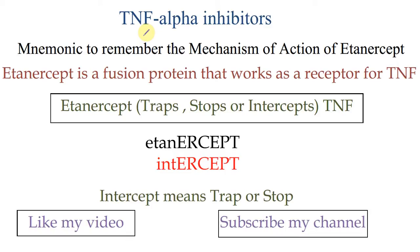The mechanism of action of etanercept is that it is a fusion protein that works as a receptor for tumor necrosis factor. We can replace the word 'receptor' with 'intercept.' So we can say etanercept intercepts tumor necrosis factor — meaning it stops or traps tumor necrosis factor.